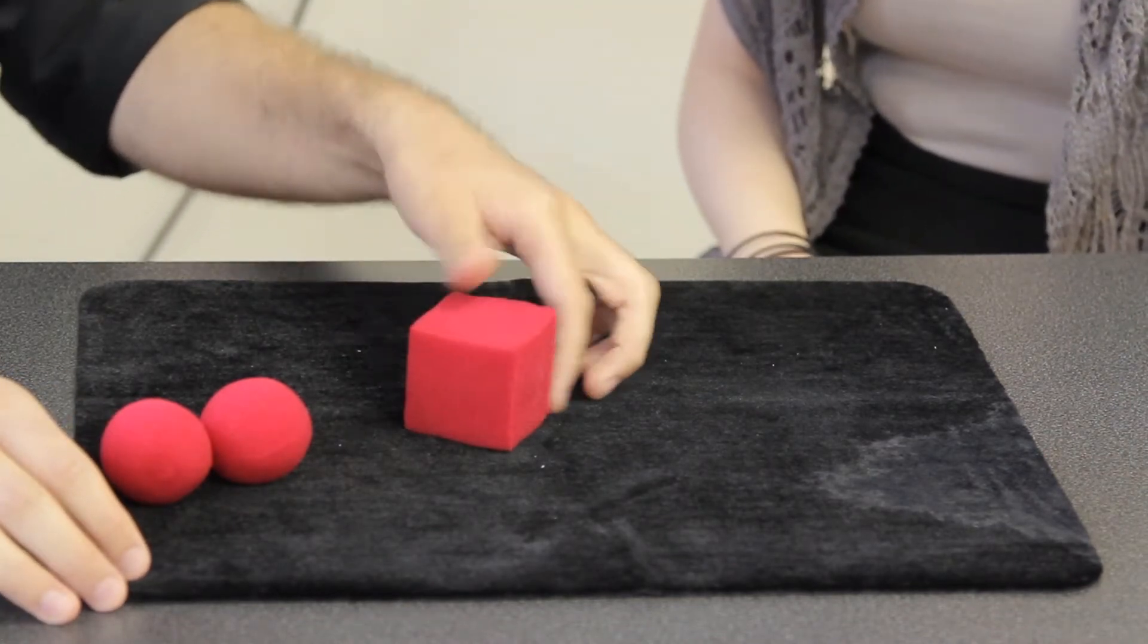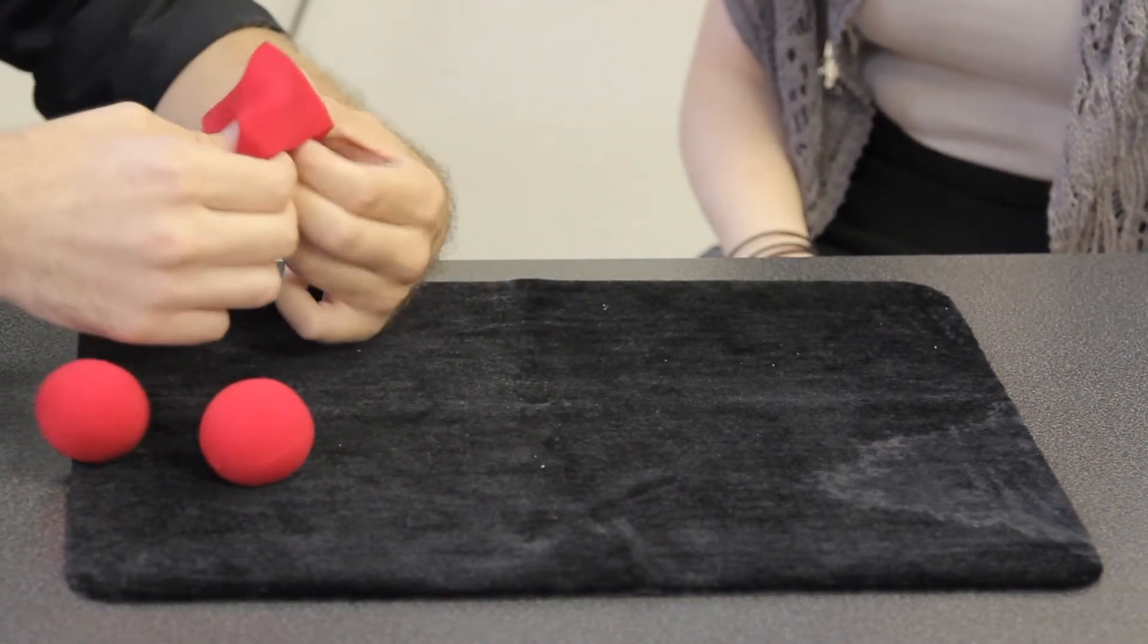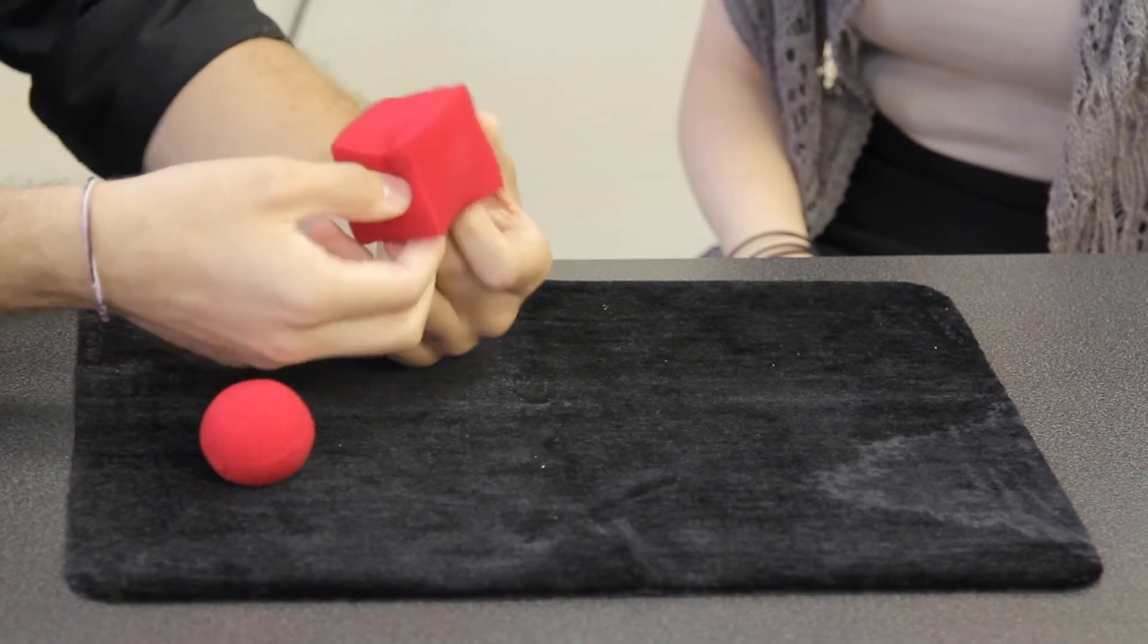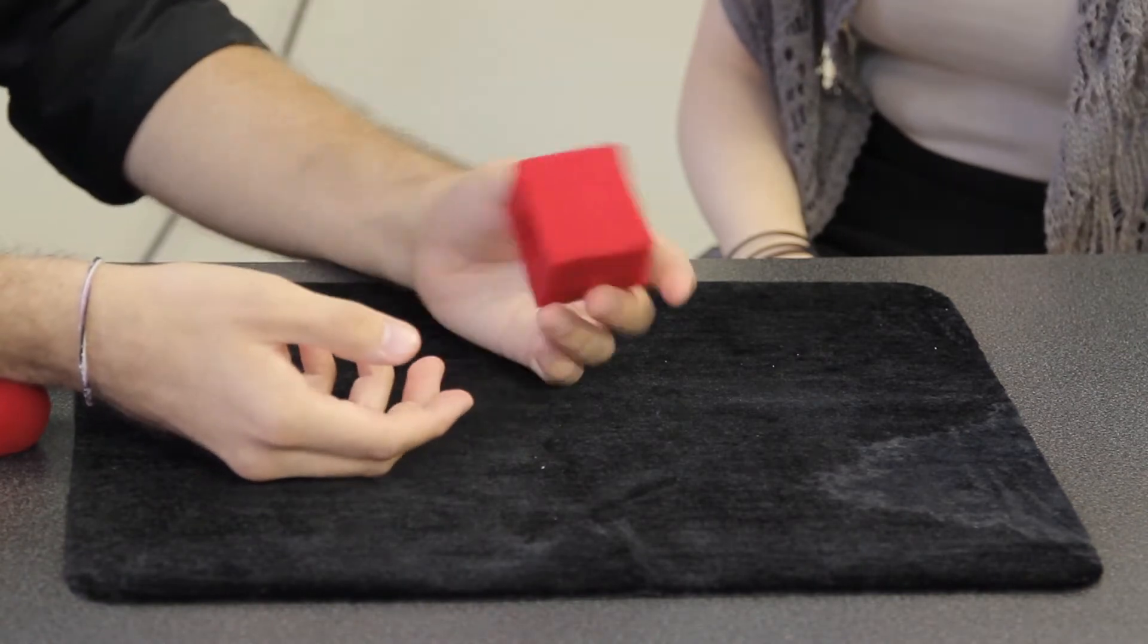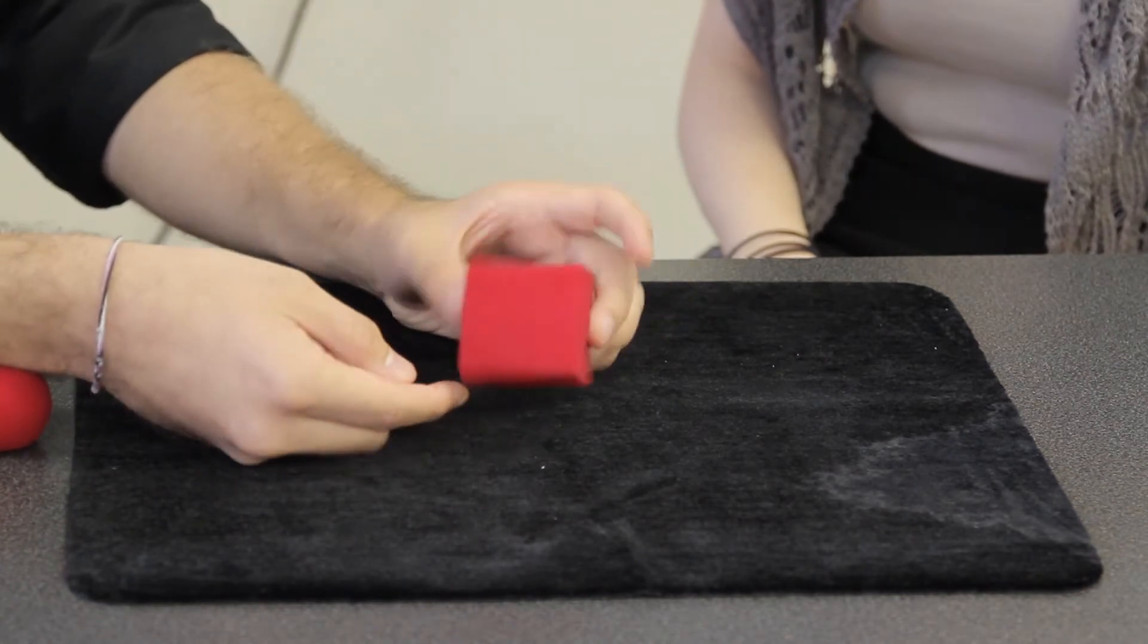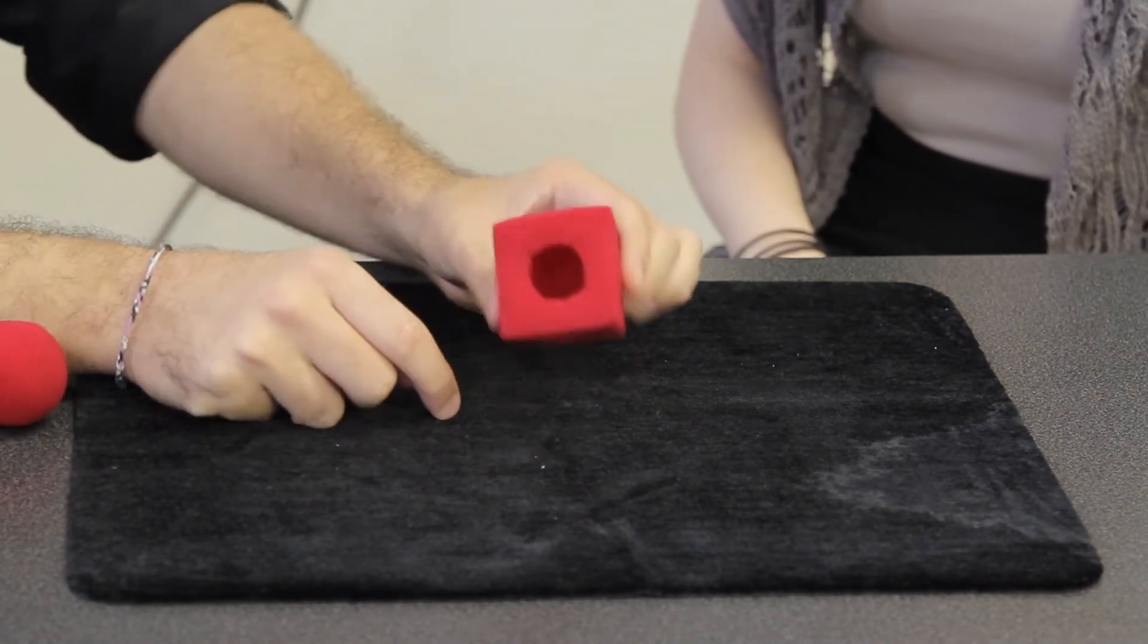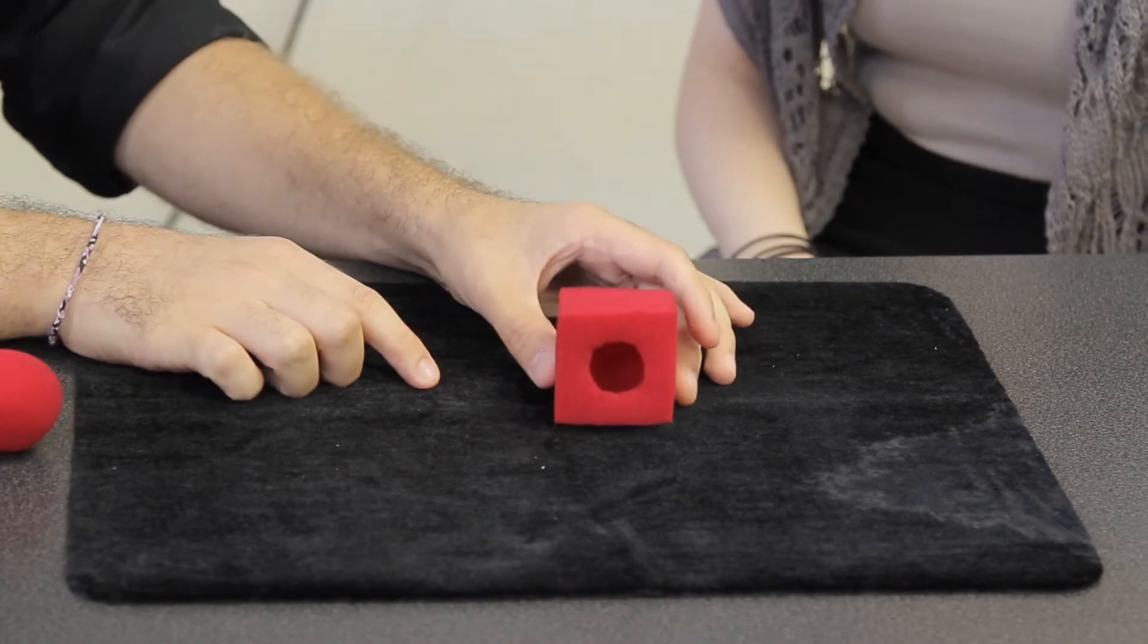Be very careful with this. What we're going to do is we're essentially going to turn the square sponge inside out. So you can see there's a little hole in the bottom which looks like this.